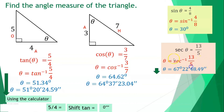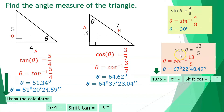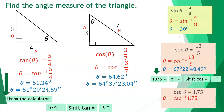To compute arc-secant with a calculator: input 13/5, press equals, then the inverse key (x⁻¹), then equals, then shift-cosine, then equals, then degree-minute-second. Use cosine because the inverse of secant is cosine. For cosecant theta = 1.75: theta = arc-cosecant(1.75) ≈ 34°50'59.66''. The inverse of cosecant is sine.